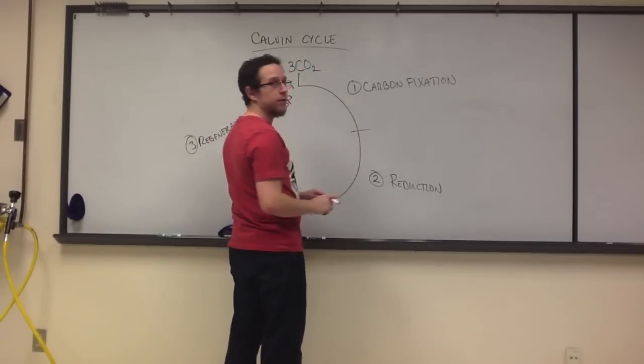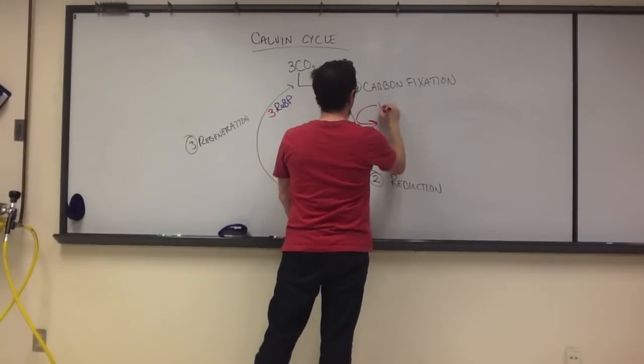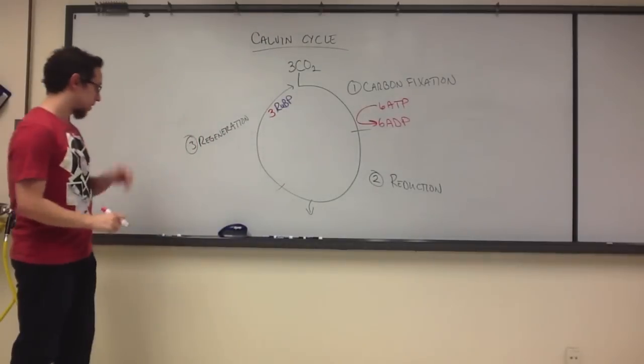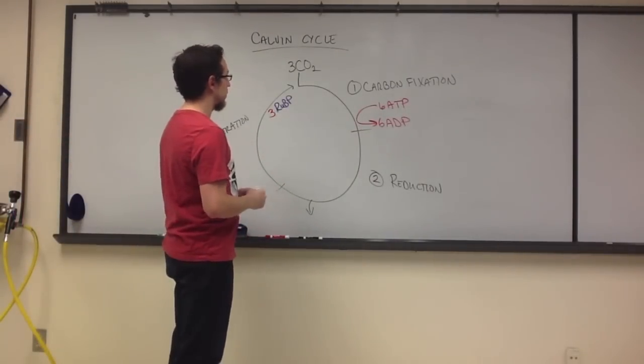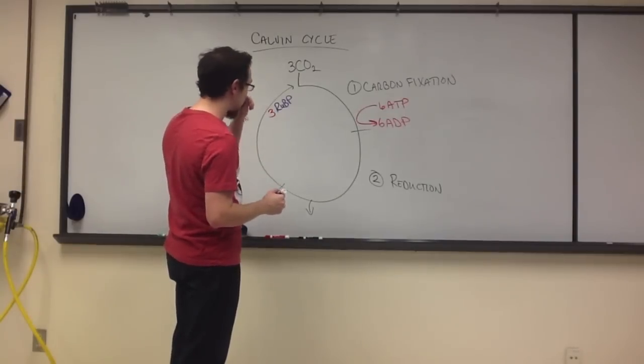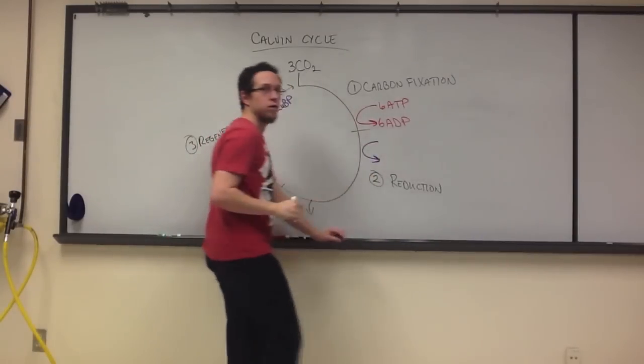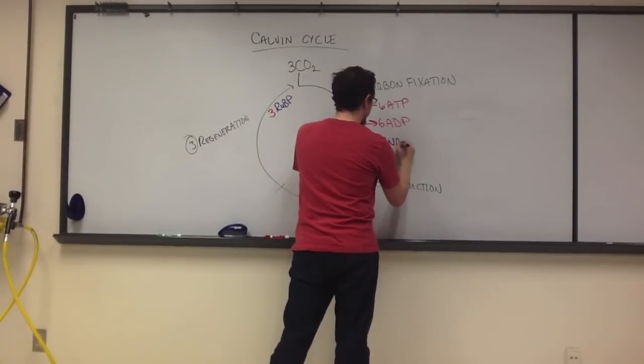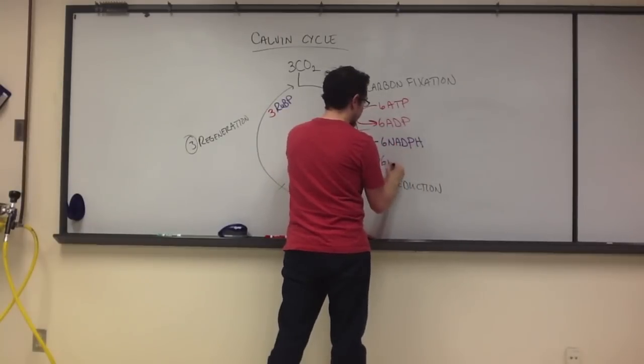During our carbon fixation portion, we're going to have an investment of six molecules of ATP. Ultimately, we generate six molecules of ADP. And then, when we get to our reduction, we're going to add six molecules of NADPH, generating then six molecules of NADP+.